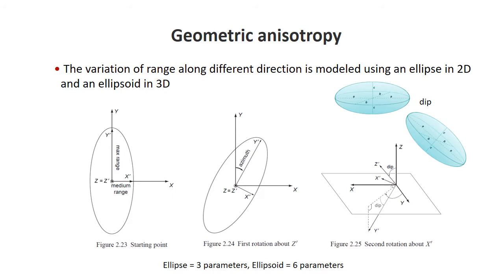How is geometric anisotropy defined? In 2D it requires an ellipse, which requires three parameters. The convention in S-GEMS is two axis lengths plus an azimuth, which is a rotation from the north-south or y-axis. In 3D you have an ellipsoid with six parameters: three axis lengths A, B, C plus azimuth rotation, dip rotation, and plunge rotation. In my own experience, for many cases you really only need four parameters — azimuth rotation and the three axis lengths — because in sedimentary or earth-layered systems, the vertical often has the smallest range, meaning dip is often zero.